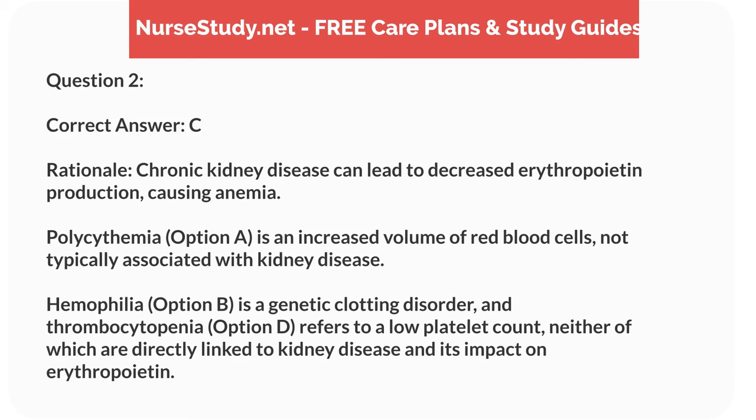Correct answer: c. Rationale: chronic kidney disease can lead to decreased erythropoietin production, causing anemia. Polycythemia, option a, is an increased volume of red blood cells, not typically associated with kidney disease. Hemophilia, option b, is a genetic clotting disorder, and thrombocytopenia, option d, refers to a low platelet count, neither of which are directly linked to kidney disease and its impact on erythropoietin.